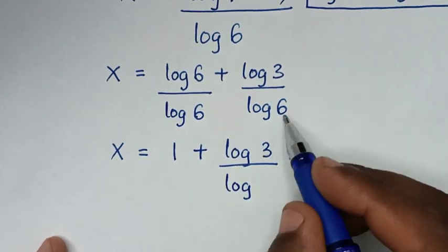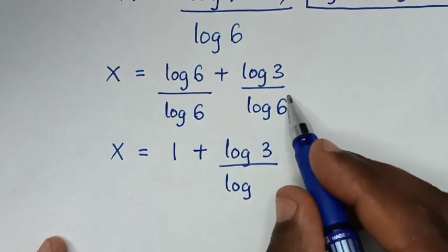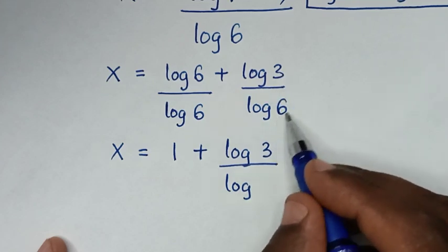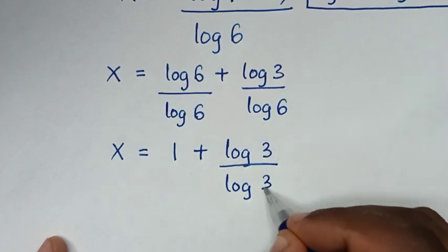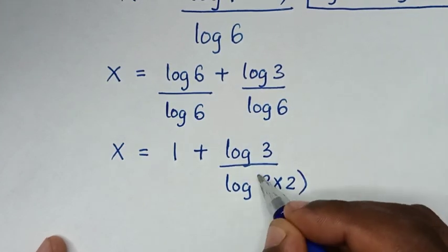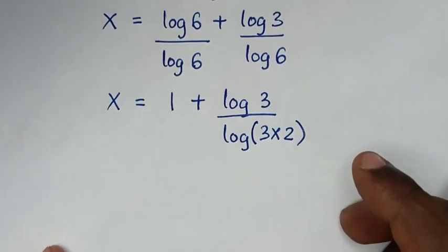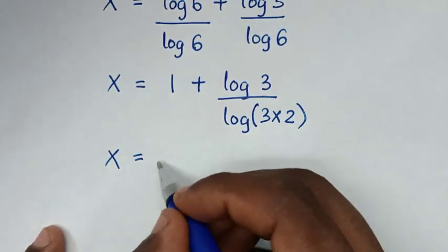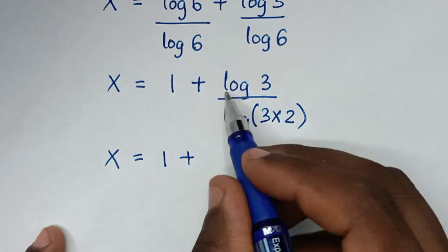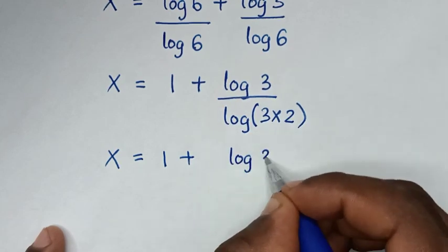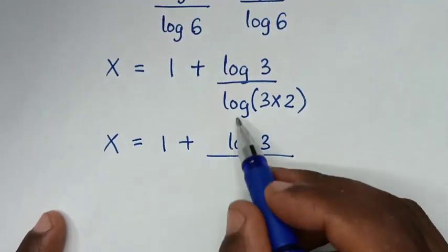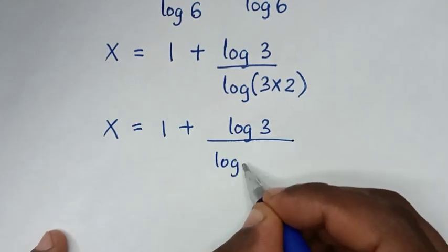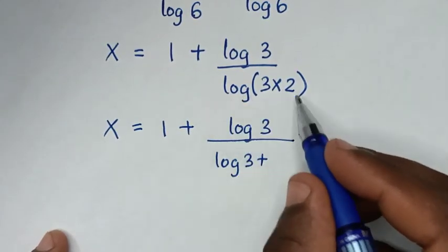Now, from this log of 6 in the denominator, 6 is the same as 3 times 2, so log of 6 equals log of 3 times 2. In the next step, x is equal to 1 plus log of 3, over log of 3 times 2, which is the same as log of 3 plus log of 2.